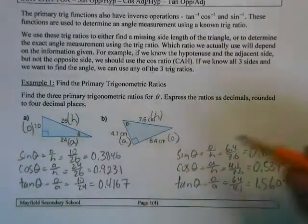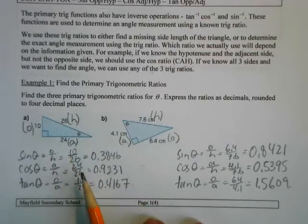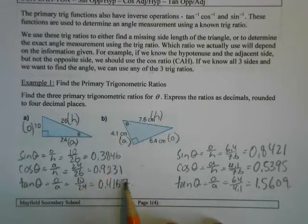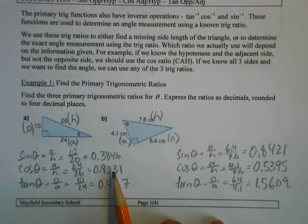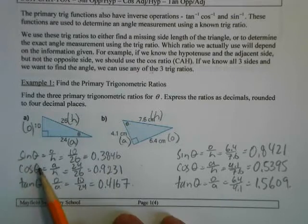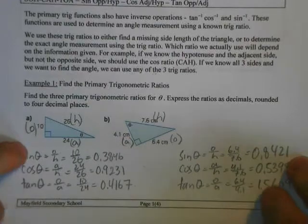These ratios don't directly give you the angles, but they allow us to get the angles. The ratios themselves don't provide directly useful information — they're an intermediate step that lets you figure out what the angle actually is. We'll see how in the next example.